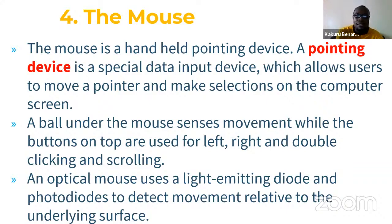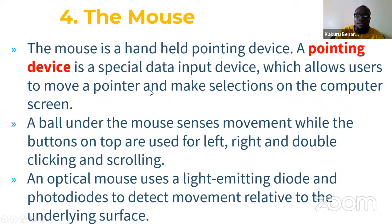Next we look at the mouse. It is also an input device — a handheld pointing device used for inputting data. It allows you to move a pointer from one place to another and also allows you to select items or an area on your computer screen. There are different types of mice.